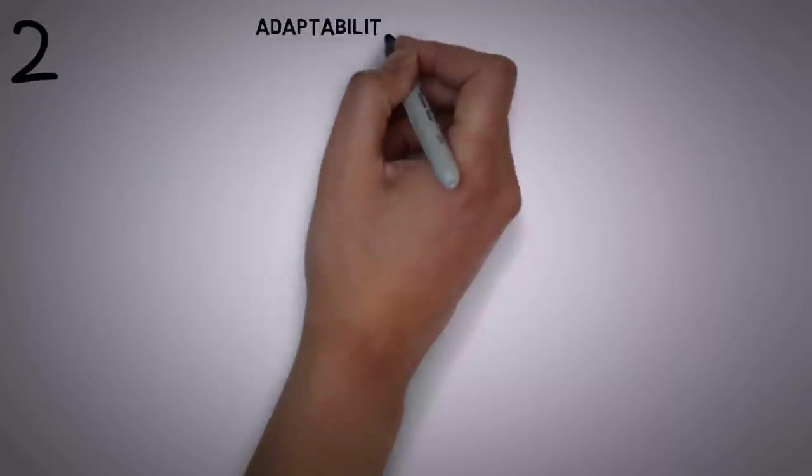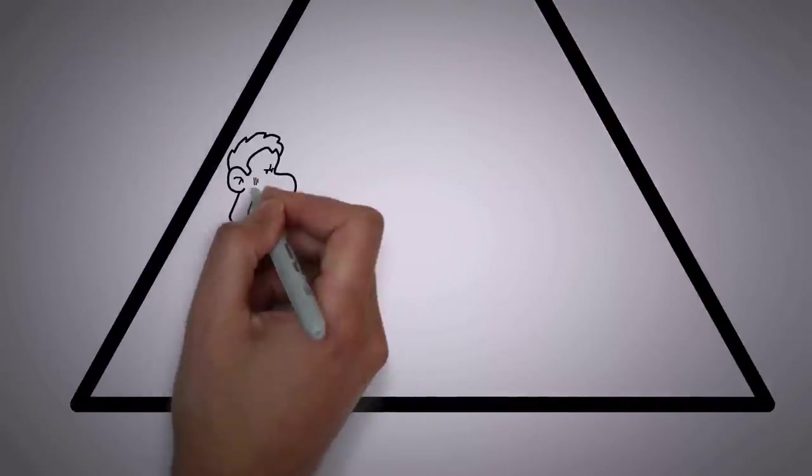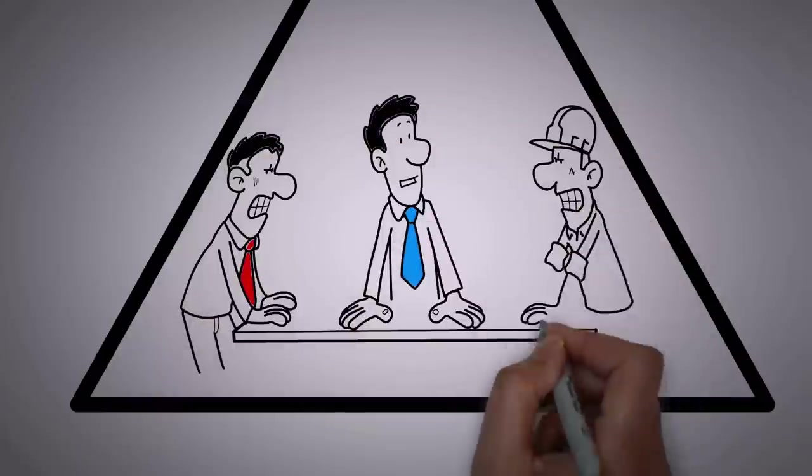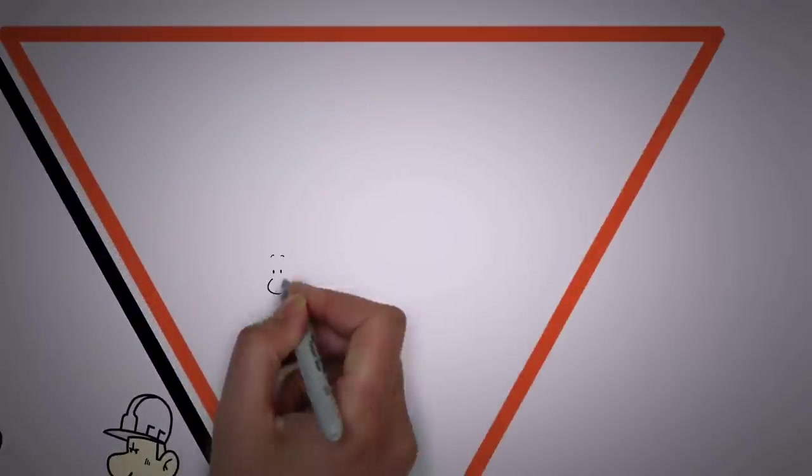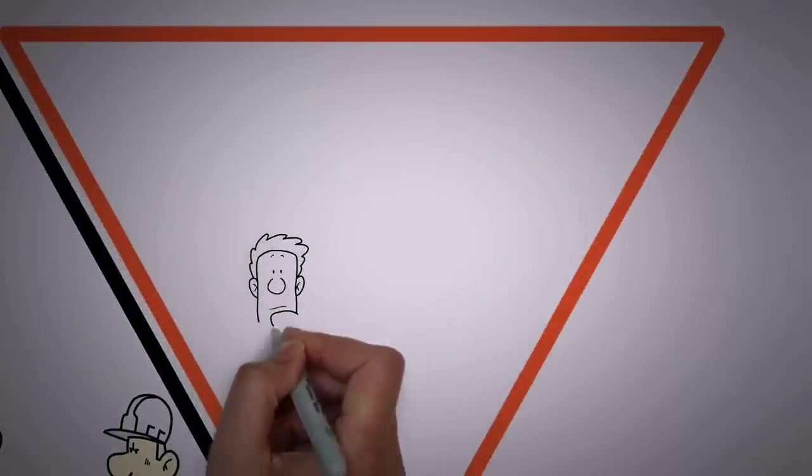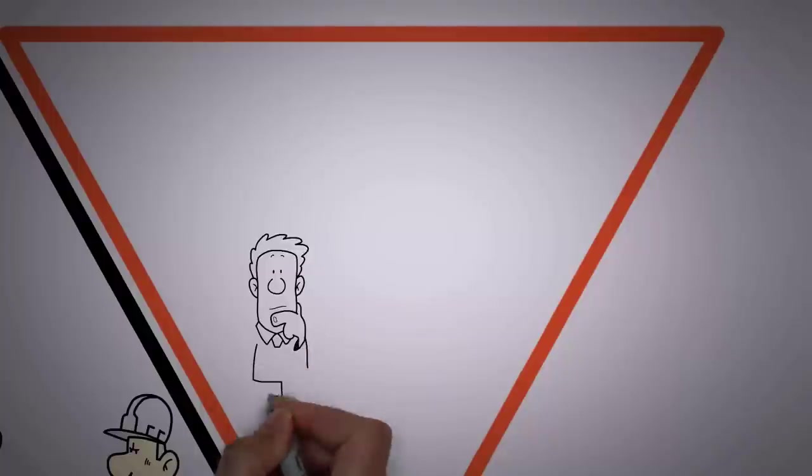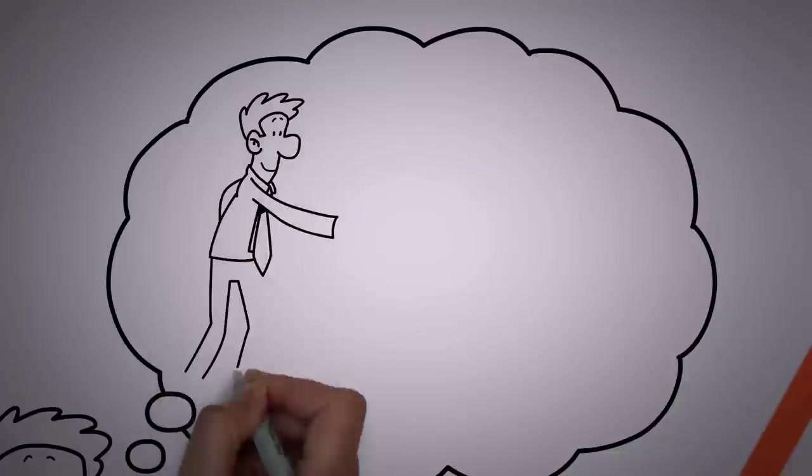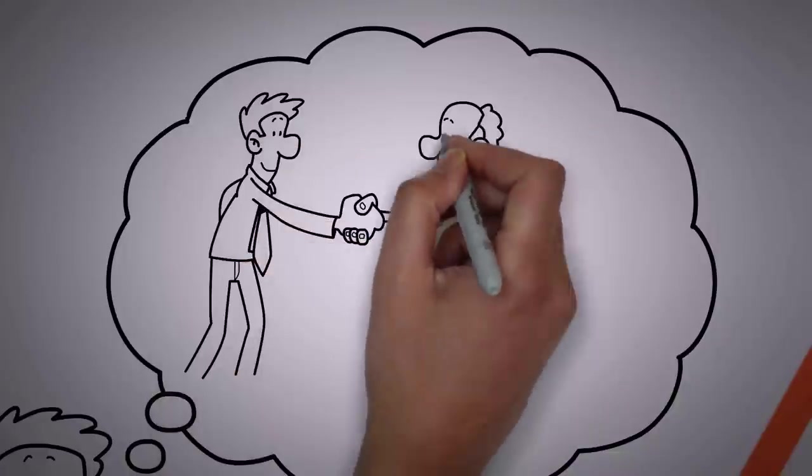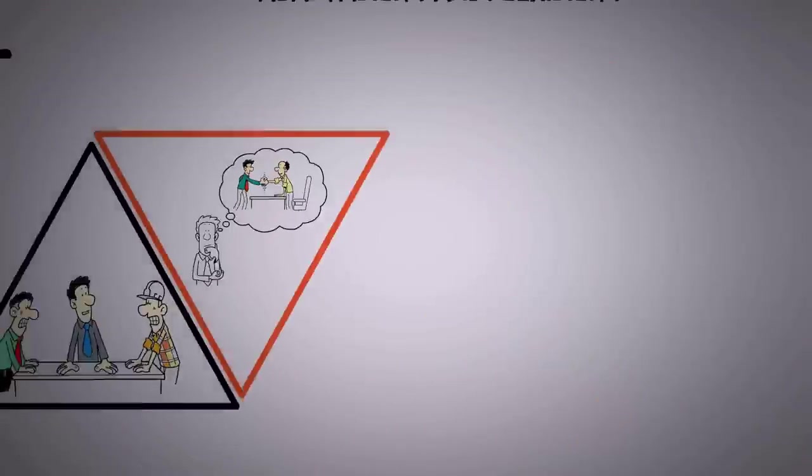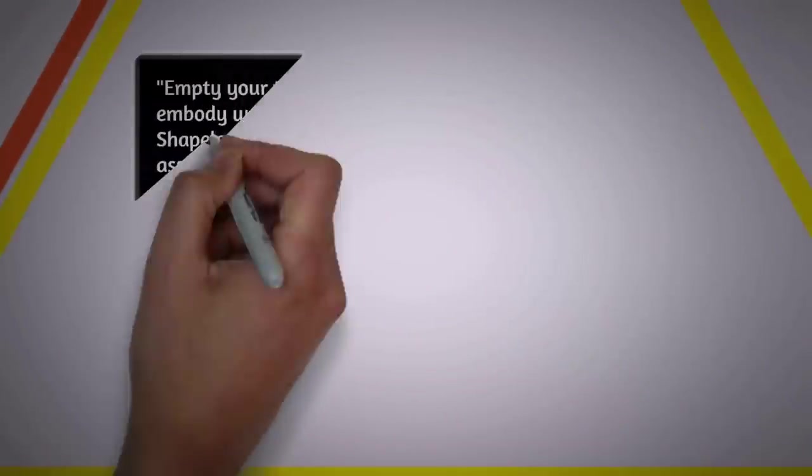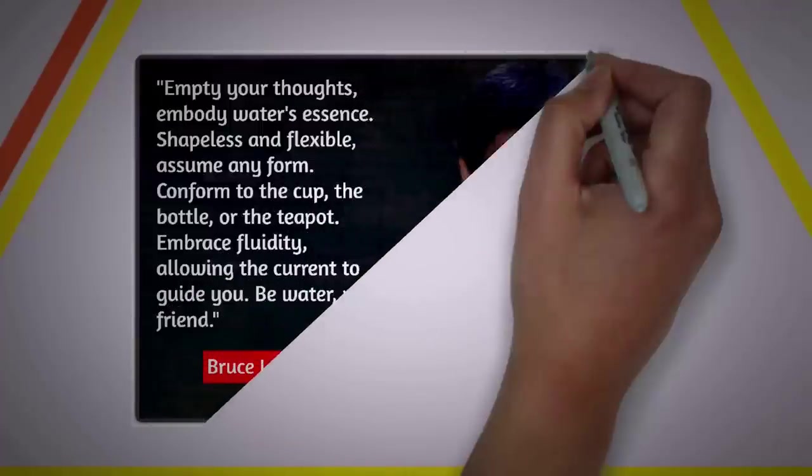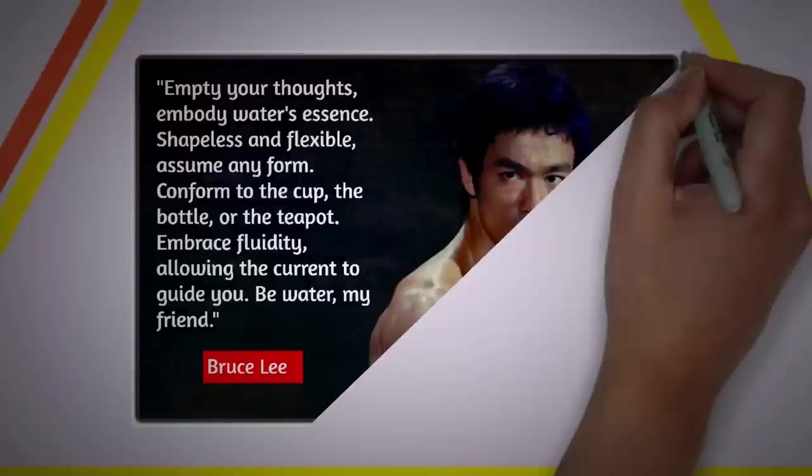Number 2. Adaptability and Flexibility. Adapting and being flexible is paramount for a Sigma male in a world of constant change and uncertainty. They possess the resilience and mental agility to navigate unexpected twists and turns, adjusting their plans and mindset as needed. They understand that rigidity leads to stagnation, while adaptability opens doors to new opportunities. As Bruce Lee famously said, Empty your thoughts, embody water's essence, shapeless and flexible. Assume any form. Conform to the cup,